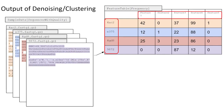The values in the table represent the total frequency by which a given feature was observed in each sample. For example, feature 1 was observed a total of 42 times in the orange sample, 12 times in the blue sample, 25 times in the red sample, and so on.